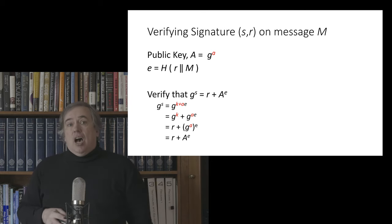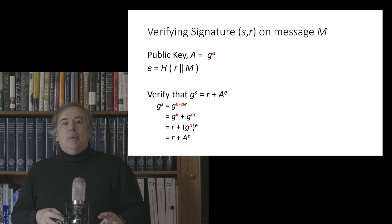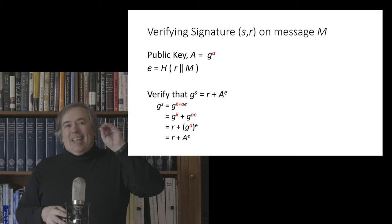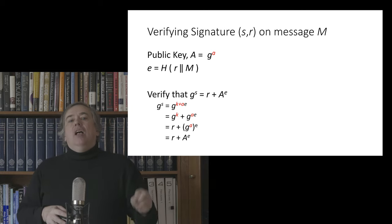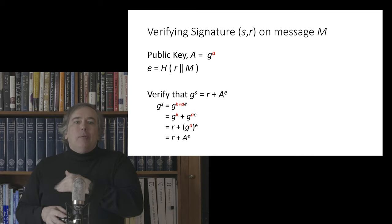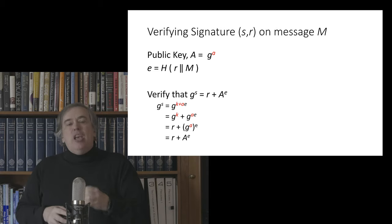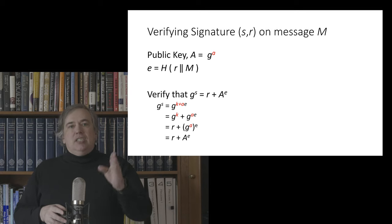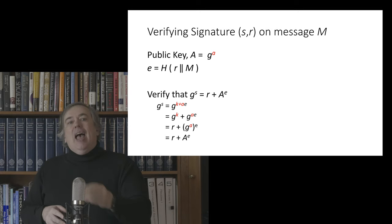So that equality will hold provided that the signature values are correct. And so this is a very secure and very nice and convenient signature scheme. There's just one little thing that we've got to be careful of, and that is that it is absolutely vital that k is never revealed. So when we implement this in a signature library, we want that library to generate k internally and then destroy it so that it doesn't get leaked to any other party that might be using the same machine.